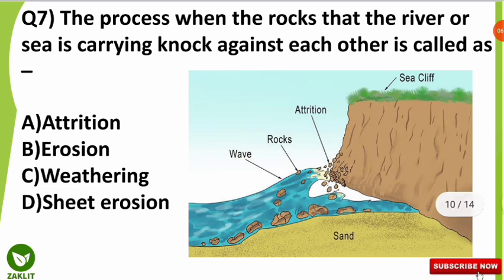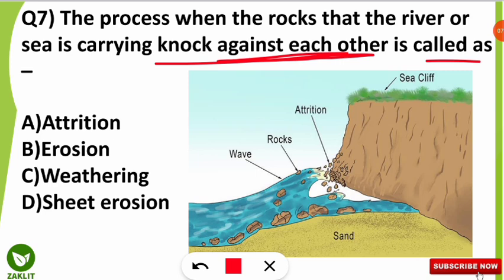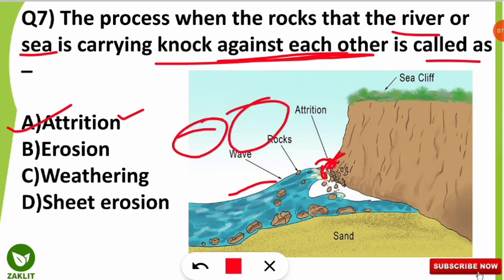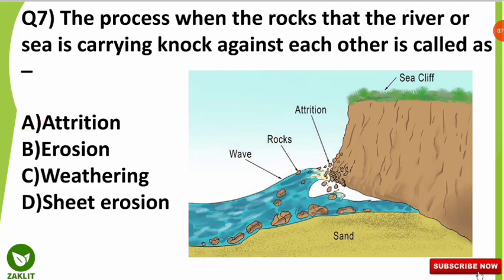The seventh question was: the process when rocks that a river or sea is carrying knock against each other is called what? This process is known as attrition. For example, as a river carries rocks along, over time the rocks knock and hit against each other. As a result, the rocks become rounded in structure — this is why most pebbles and rocks are rounded.